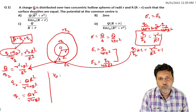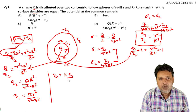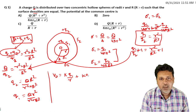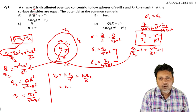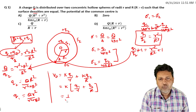At the center point O, the potential due to surface 1 and surface 2 combined is: V = (1/4πε₀) · [q1/r + q2/R].